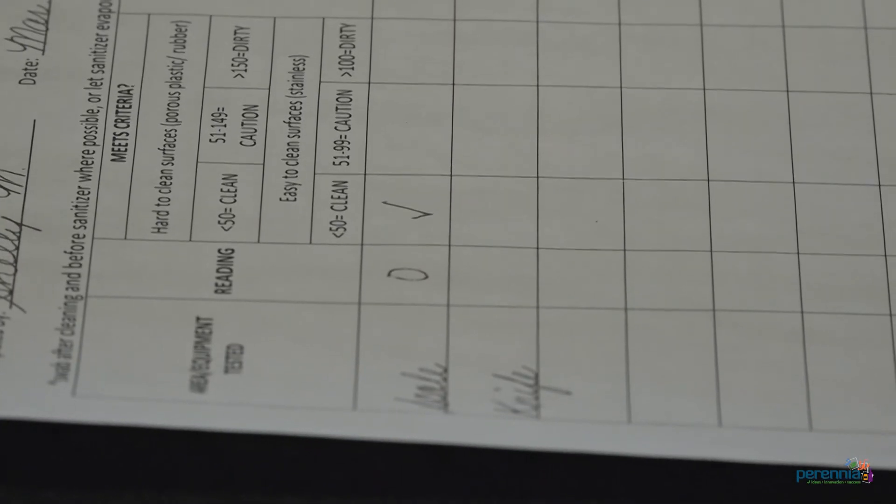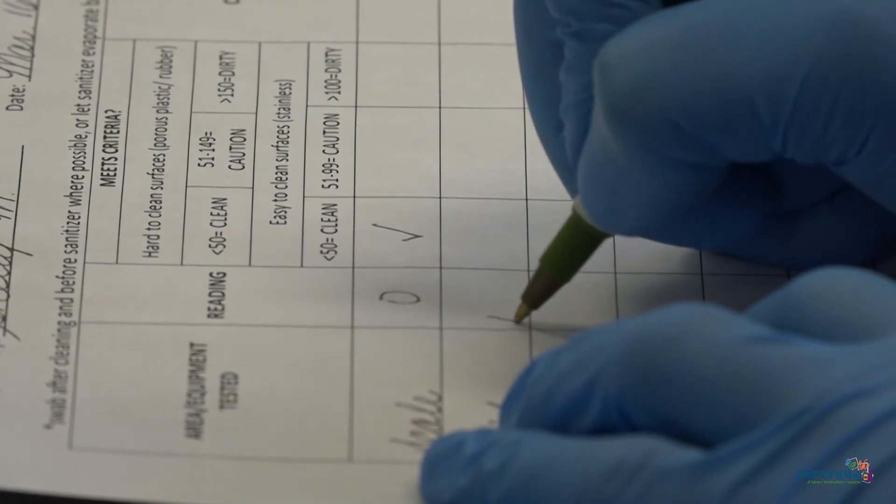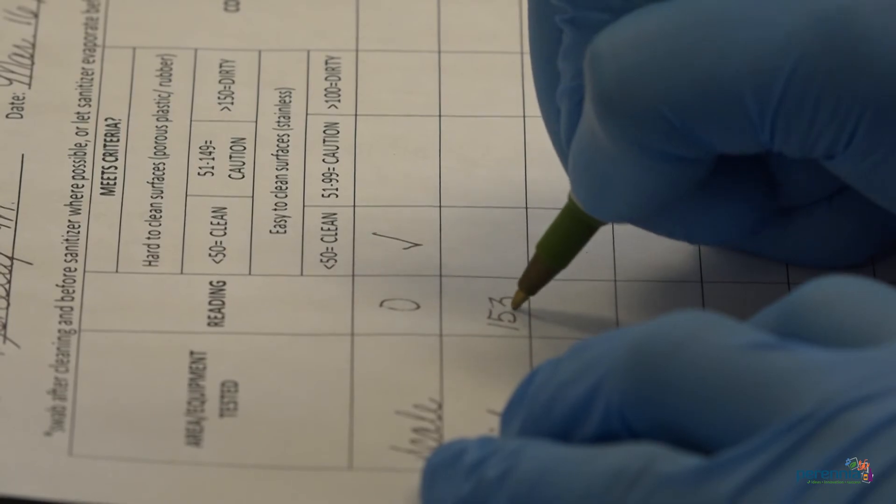Step number ten, record results on ATP monitoring records. If the records are not within spec, re-clean and re-swab.